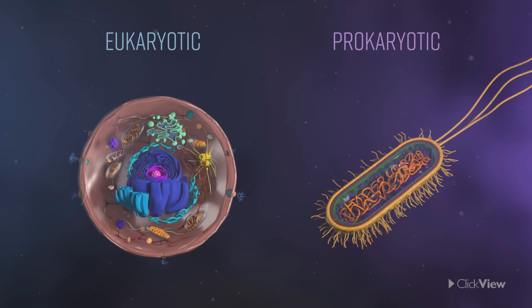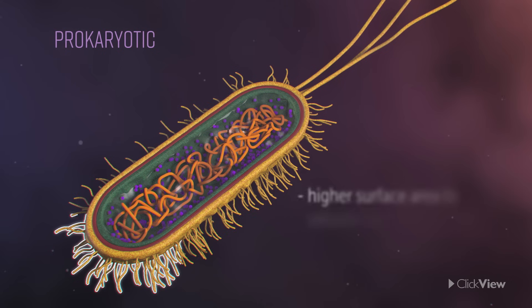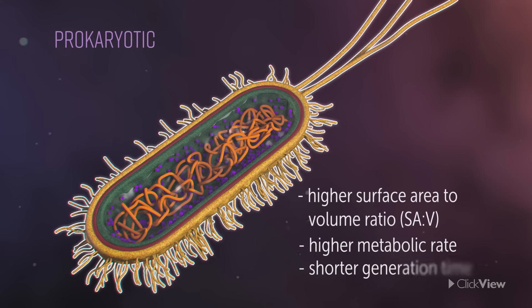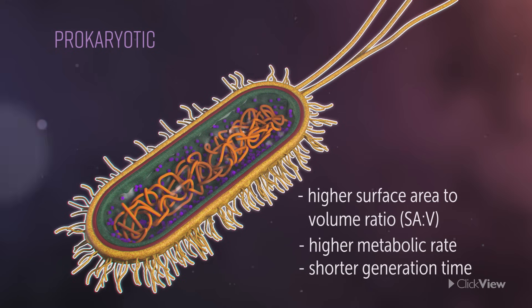Finally, prokaryotic cells have a larger surface area to volume ratio than eukaryotic cells, which results in a higher metabolic rate and therefore increased growth rate and shorter generation time.